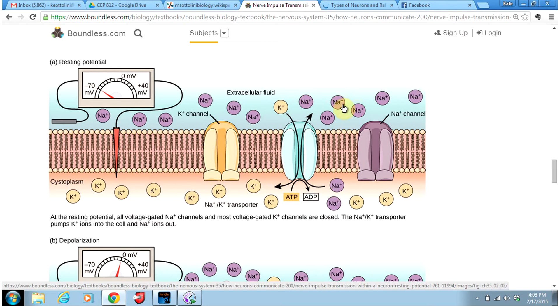Notice that when the cell is at rest, we have a lot of Na plus on the outside versus only a little Na plus on the inside. We seem to have more K plus on the inside compared to K plus on the outside. We also have a lot of negatively charged proteins on the inside of the cell, which is another reason why the inside is negatively charged.